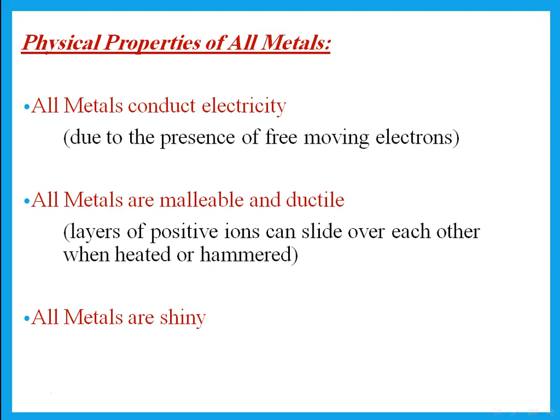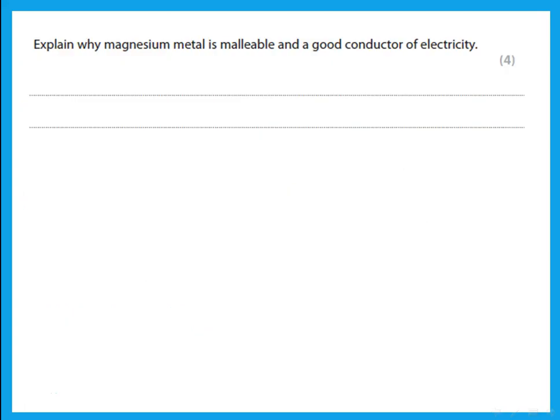What are the physical properties of all metals? If the question says 'all metals,' we say: all metals conduct electricity, all metals are malleable and ductile, all metals are shiny. We do not say all metals have a high melting point, because that is variable between different metals. Metals conduct electricity because they have free-moving electrons. Ionic compounds conduct electricity due to free-moving ions, but metals and graphite conduct electricity due to free-moving electrons. Metals are malleable and ductile because the layers of positive ions can slide over each other when heated or hammered.